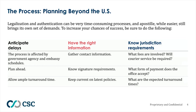For making sure that you have the right information, get the contact information of all the different parties involved, including your embassies and consulates. Learn what signature requirements you might need, and make sure that you stay up on current policies, as they may change. Also, know your jurisdiction requirements: learn about the fees involved, determine whether you might need a courier service, learn what types of payments the office expects, and find out their anticipated turnaround times.